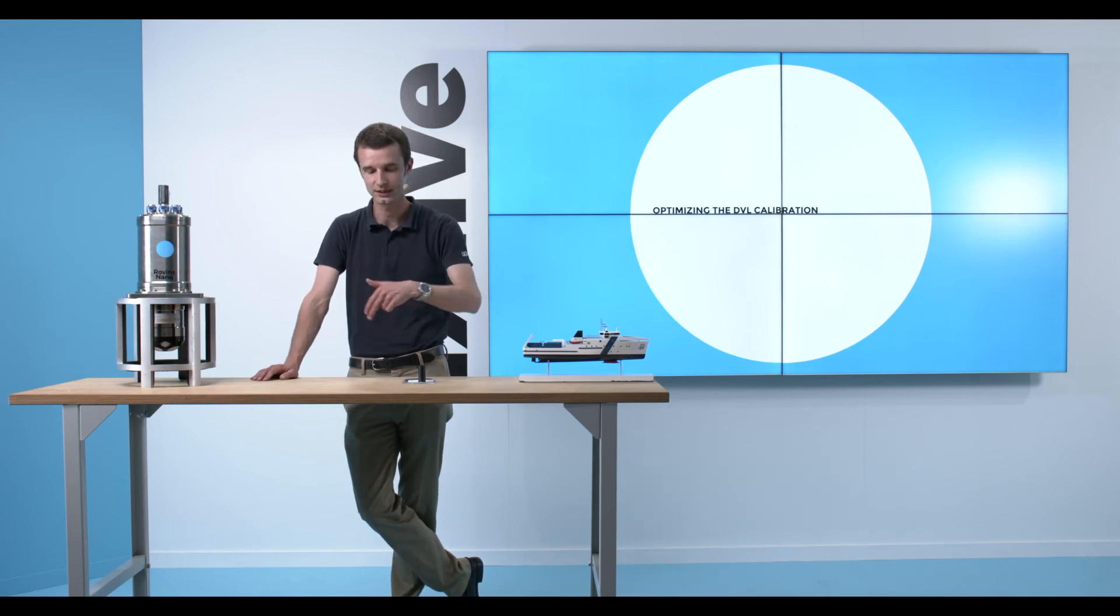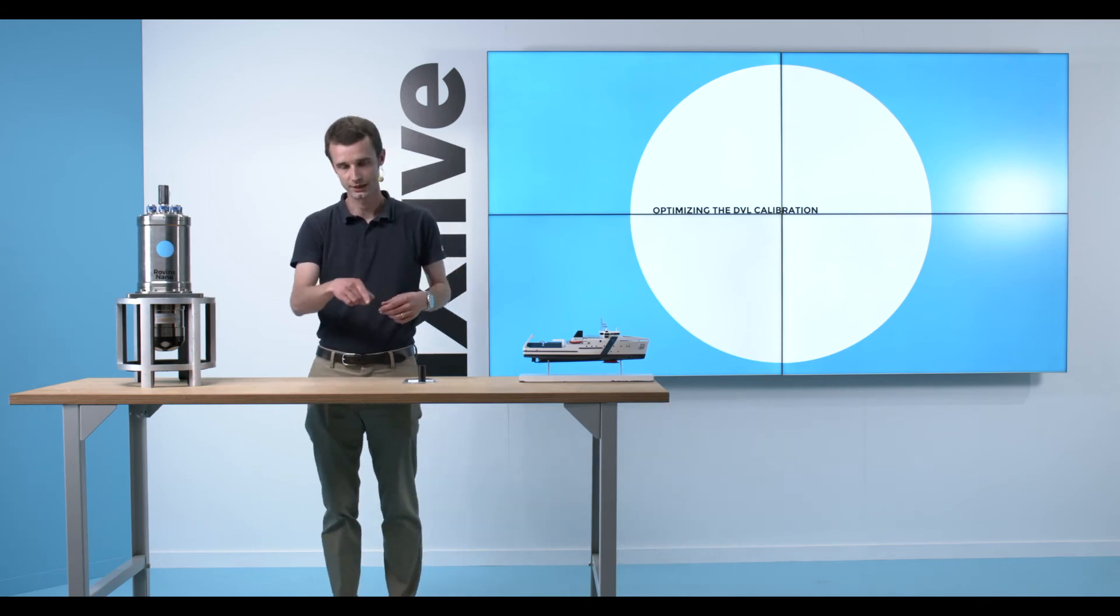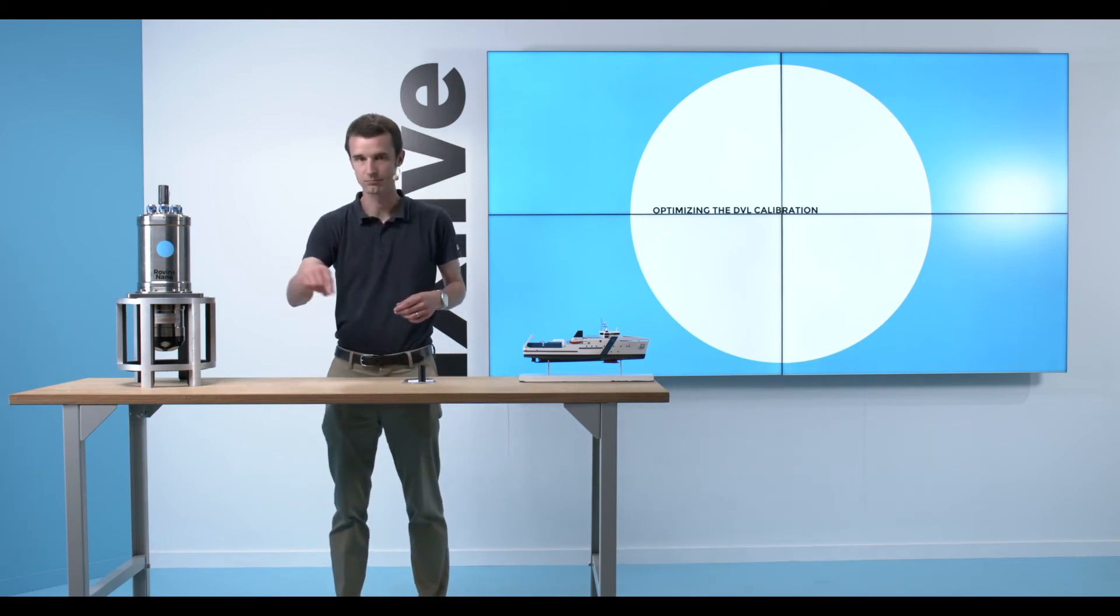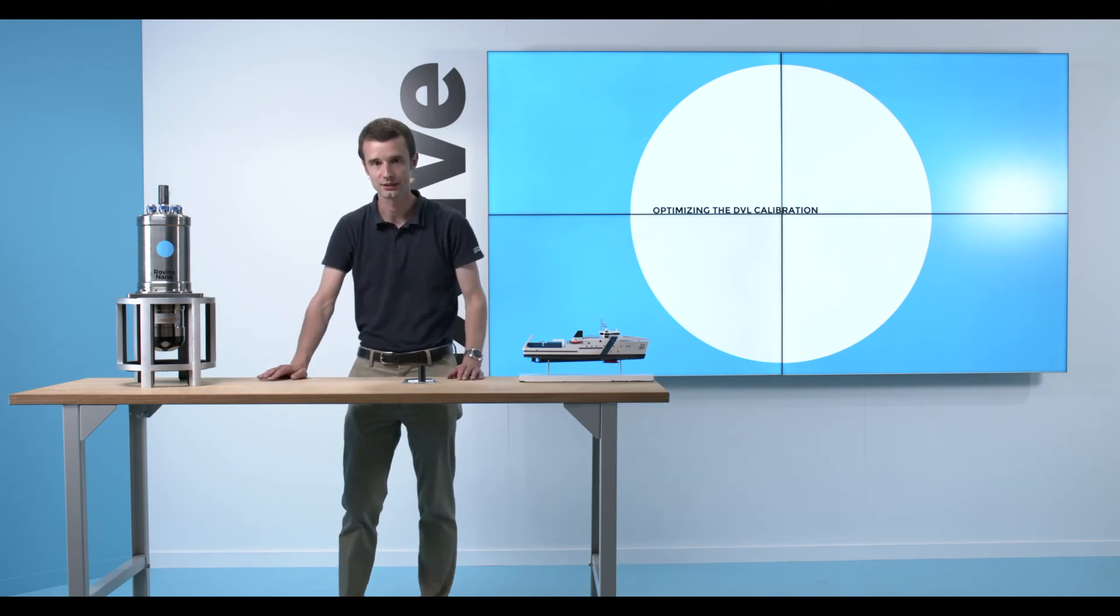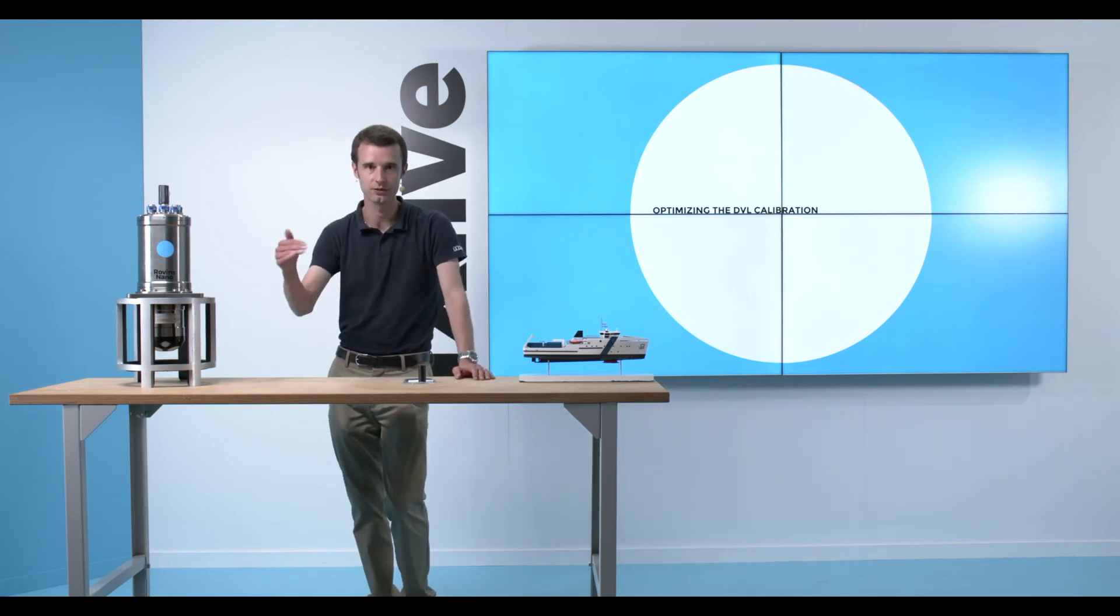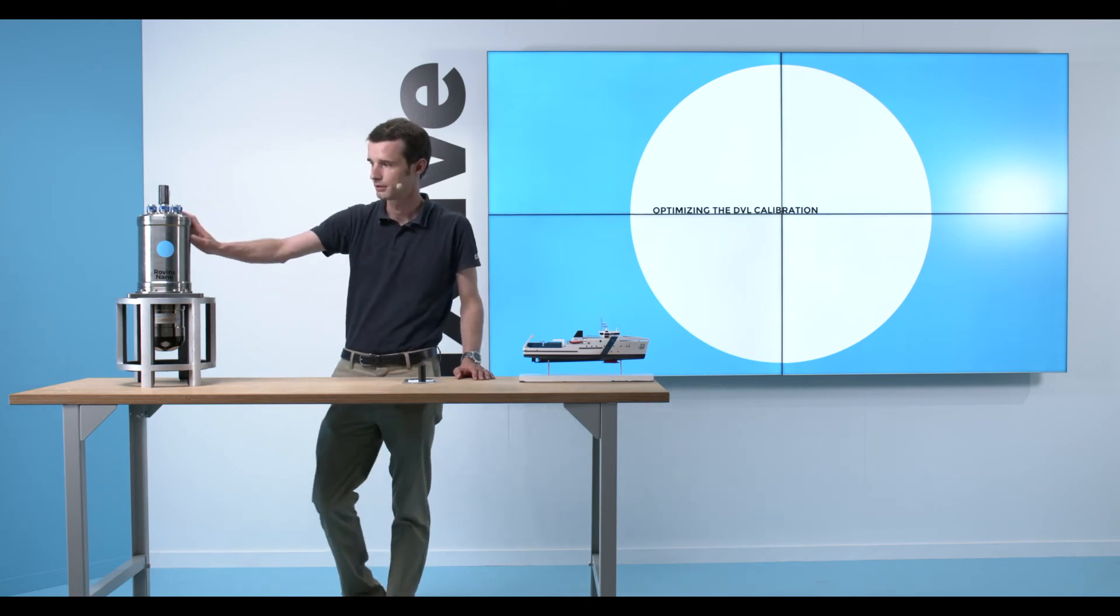The second thing you would have to do and that I recommend is what we call in our line of work the perfect alignment. Go a little bit more on the 8 shape pattern or the square shape pattern for your heading standard deviation to converge even below the marker values we provide you. For example, the Rovins Nano,